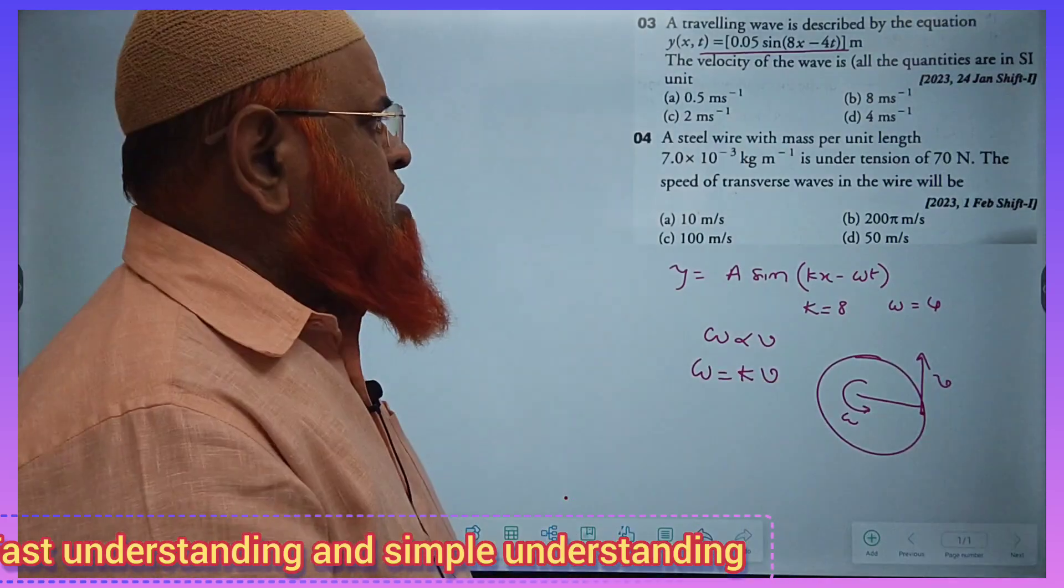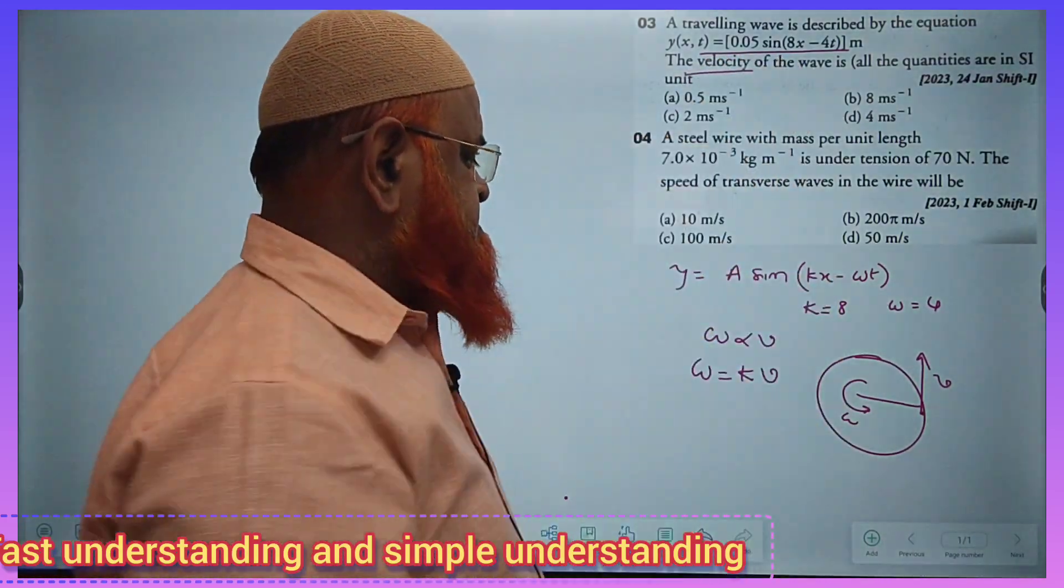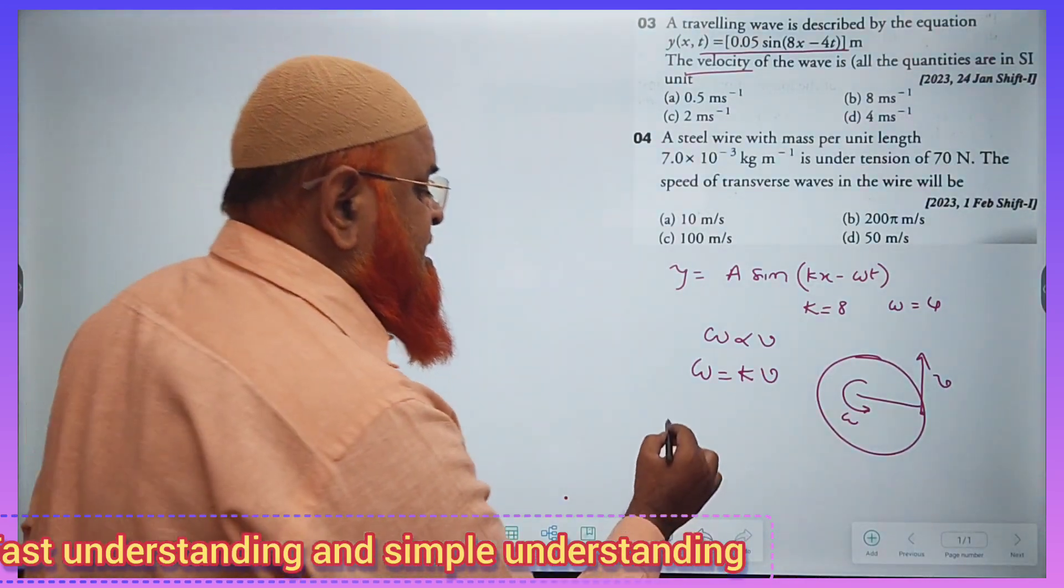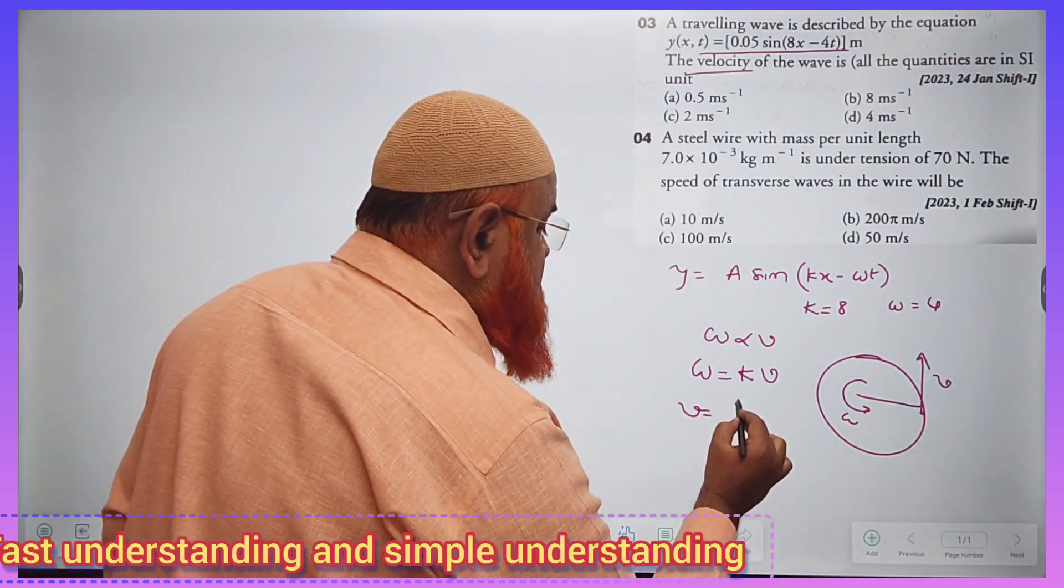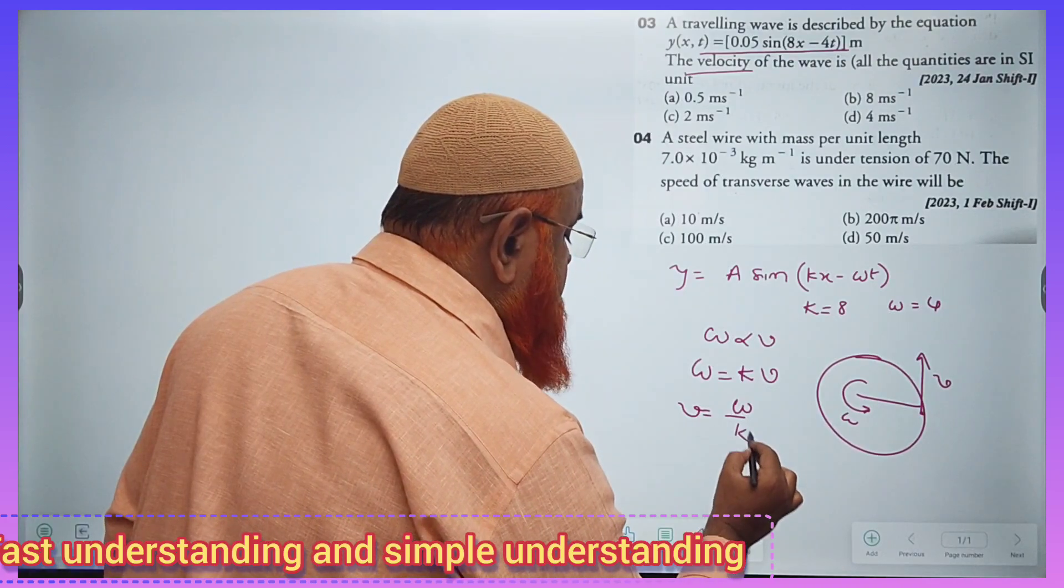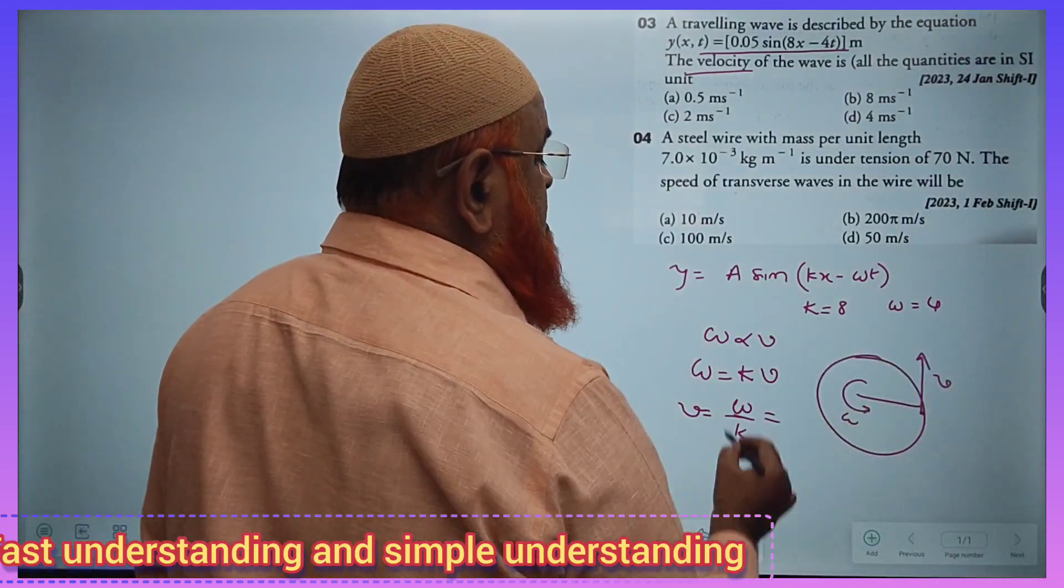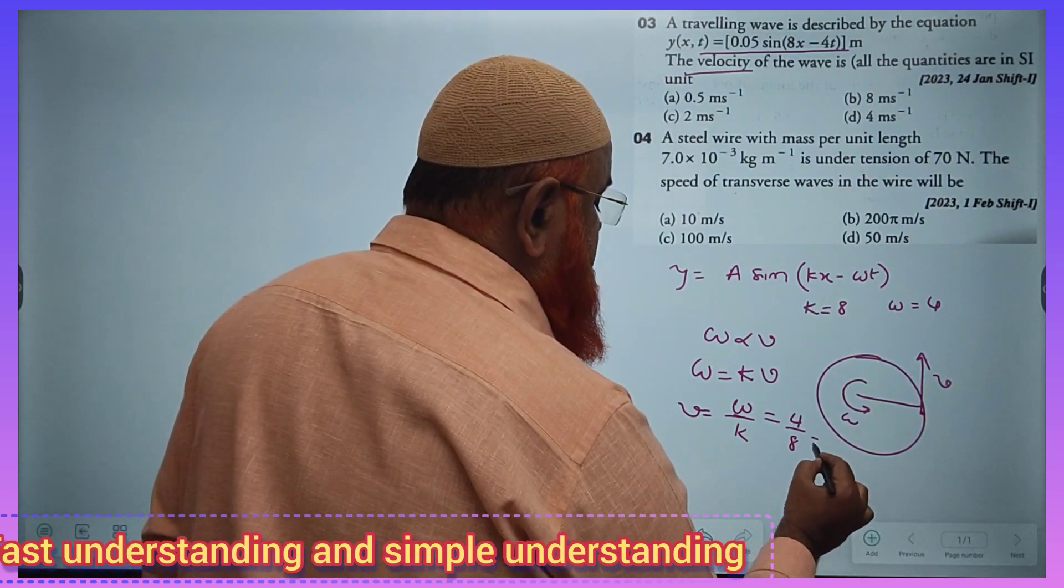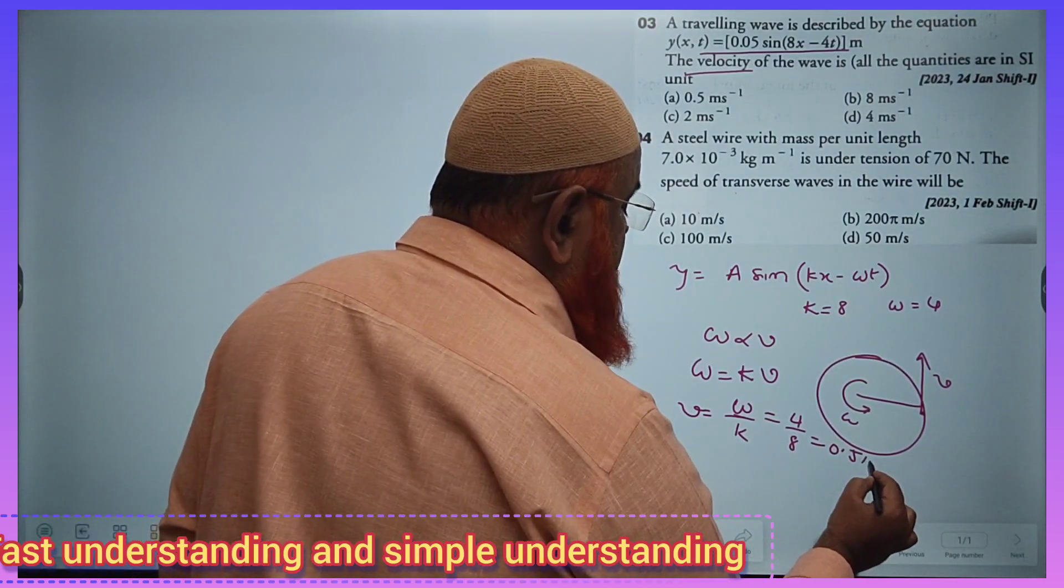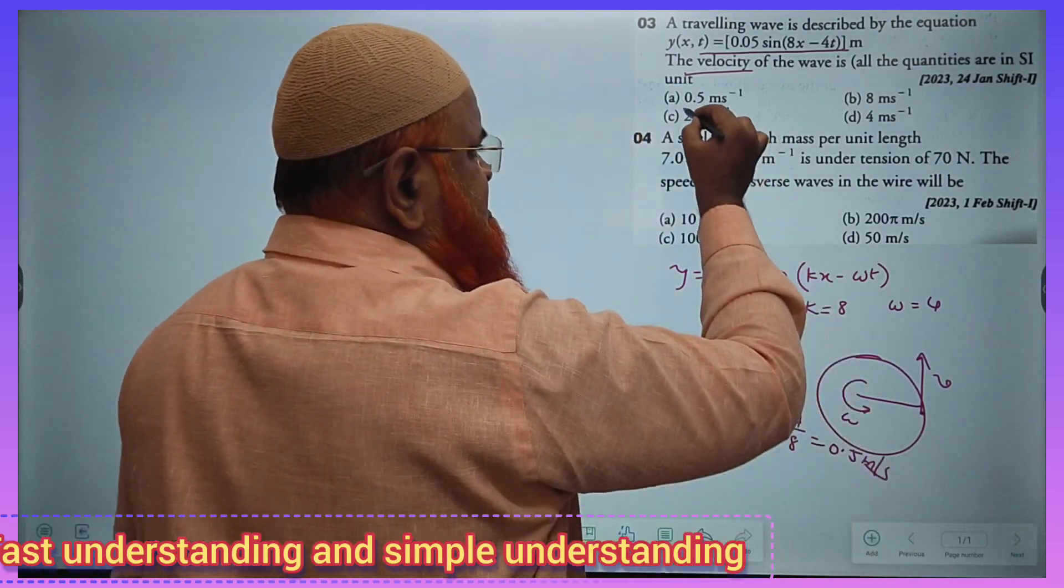And in the problem, he is asking us to find out the velocity. Then what is the formula for velocity? Velocity is nothing but ω/k. You all know what is ω. You all know what is k also. So 4/8, which is nothing but 0.5 meters per second. Your answer is ready.